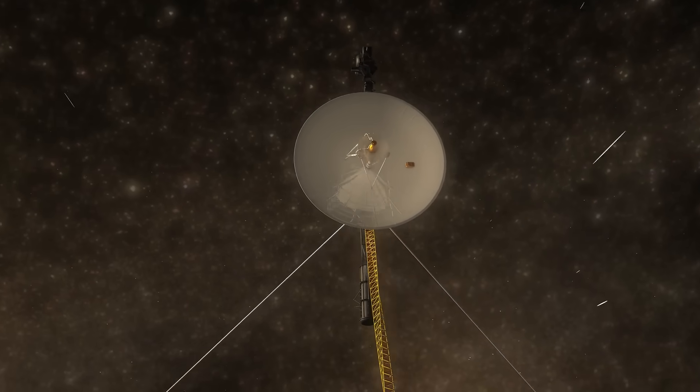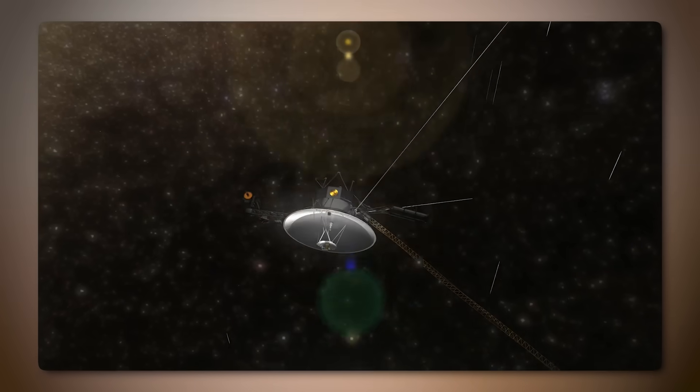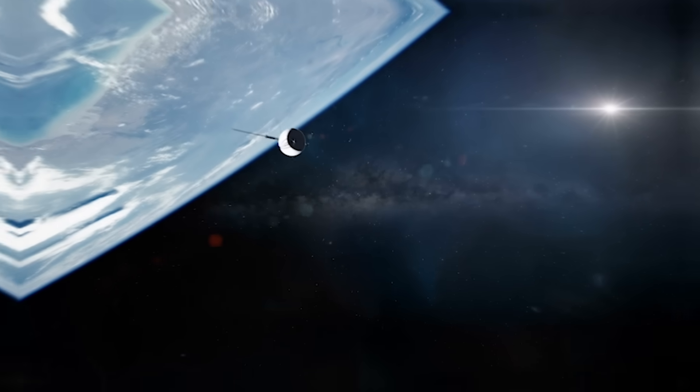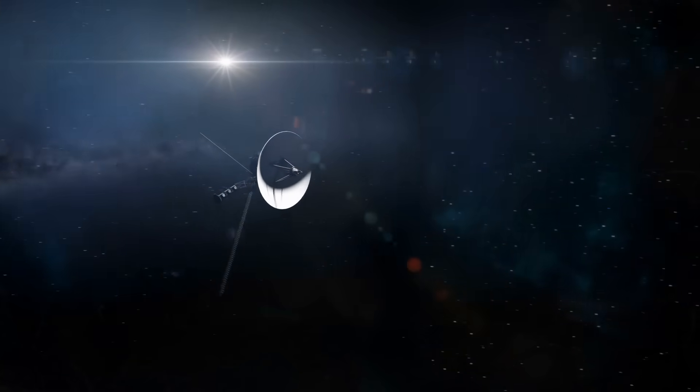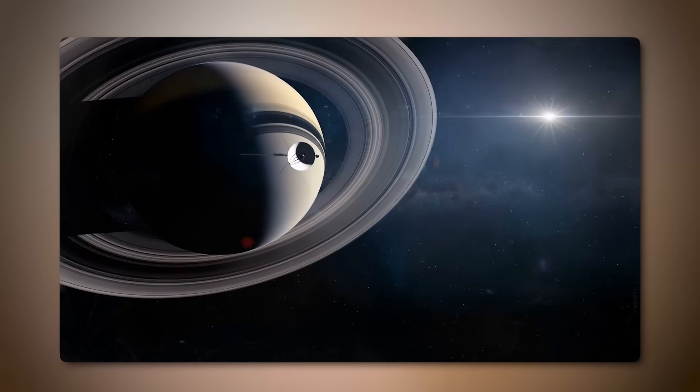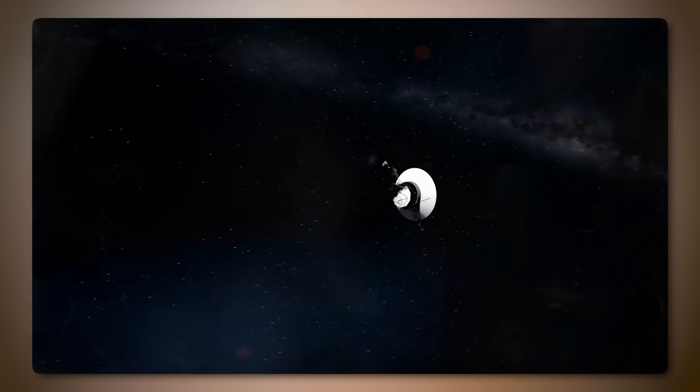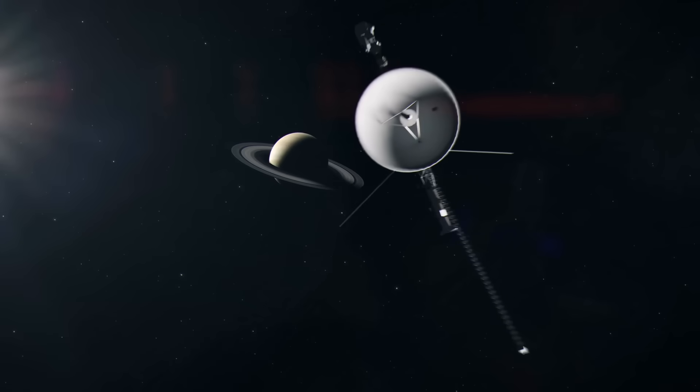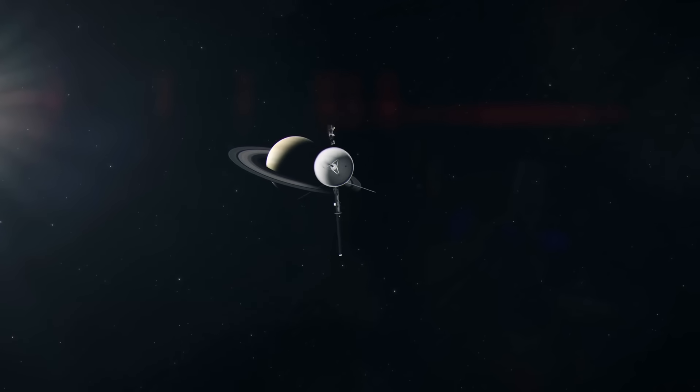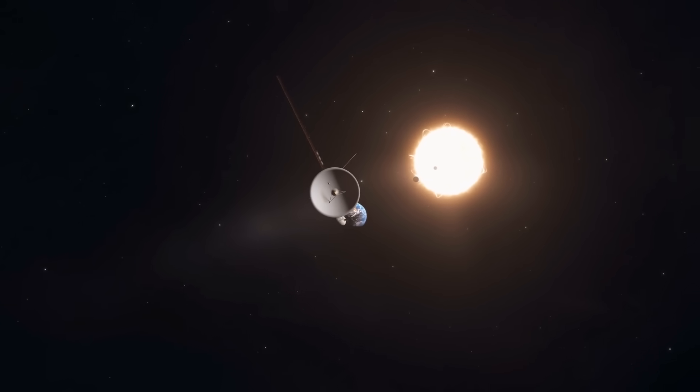And that wraps up our journey with Voyager to the very edge of our solar system. These discoveries remind us how vast and mysterious our universe truly is, and just how much we still have to learn. The data Voyager sends back not only deepens our understanding of space, but also gives us perspective on our tiny place in it. With every mile Voyager drifts further, it carries with it humanity's curiosity and our message to the cosmos. If you enjoyed this look at Voyager's incredible mission, don't forget to like, subscribe, and hit the notification bell so you never miss our next deep dive into the mysteries of space. Thanks for watching, and keep exploring.